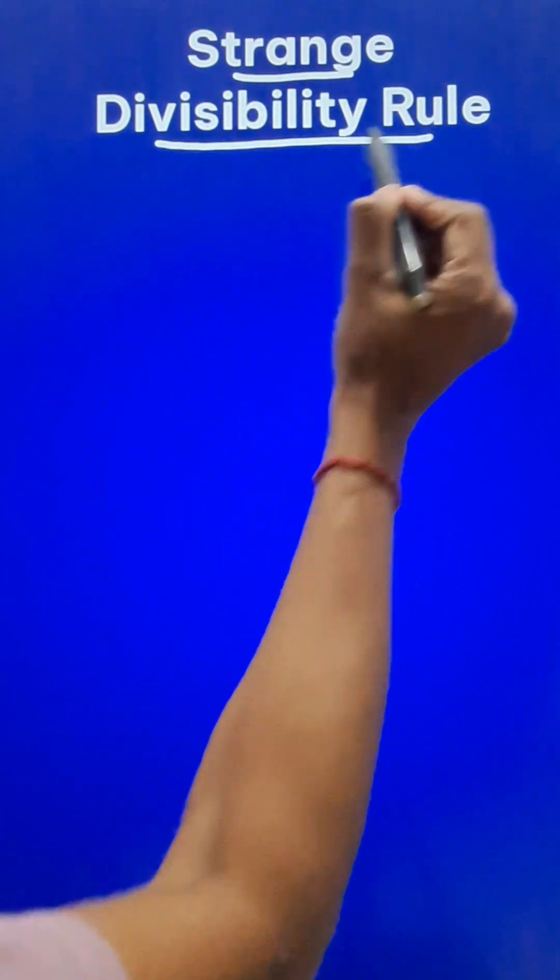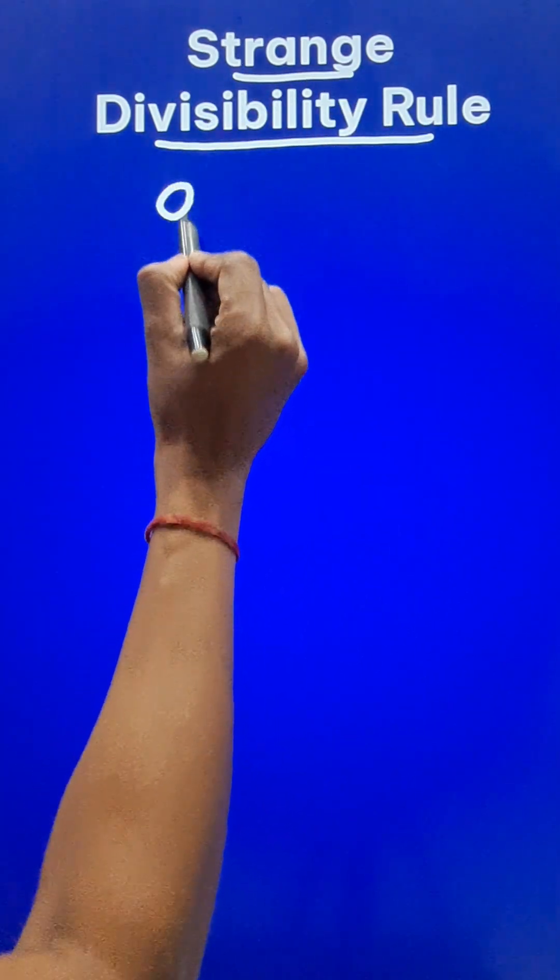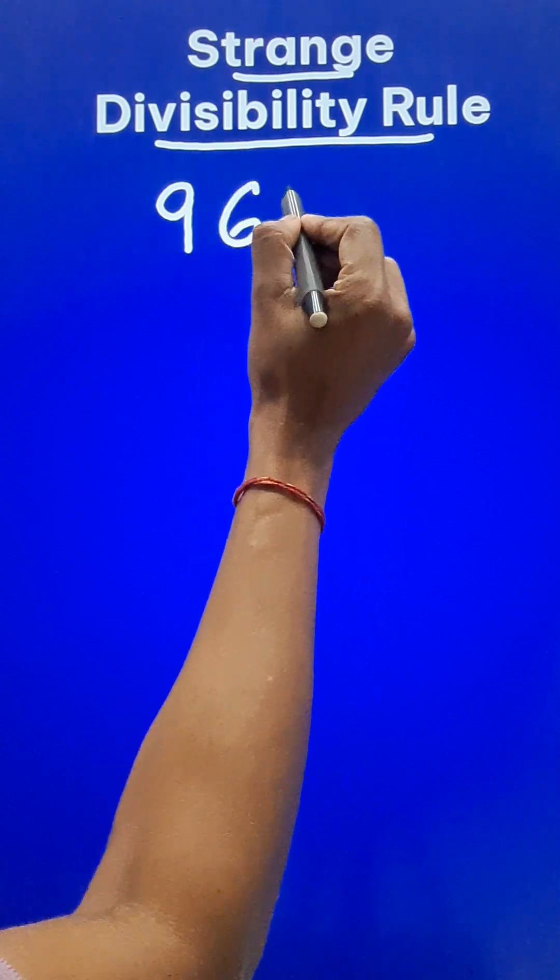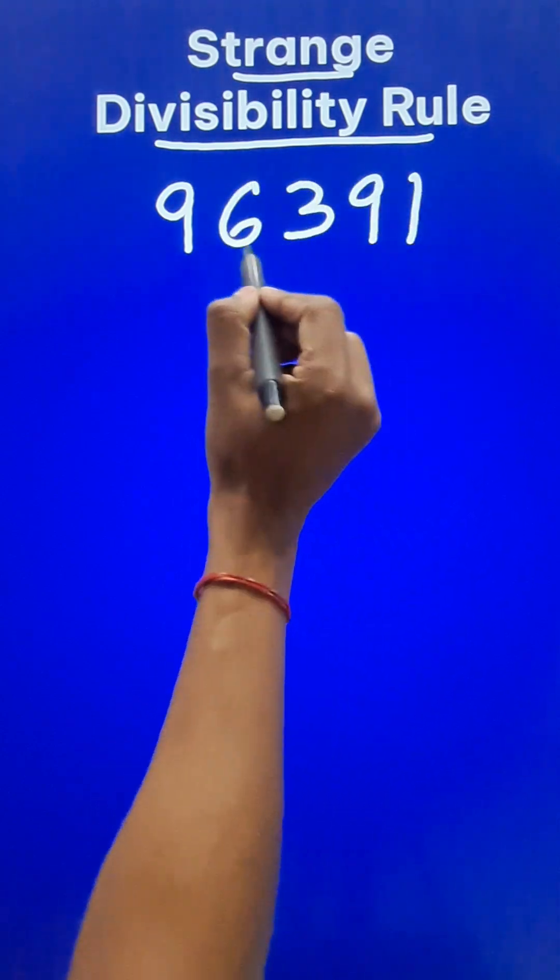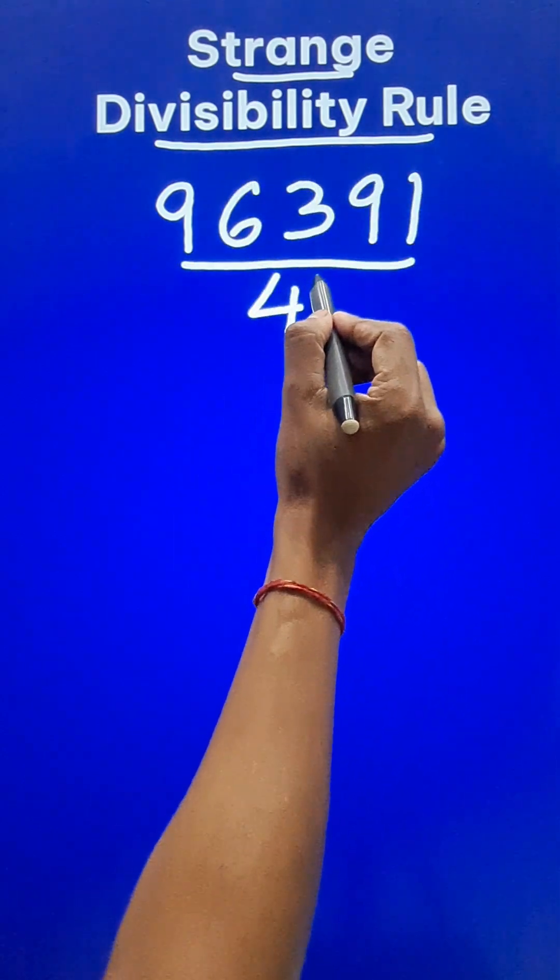Here is a strange divisibility rule. Suppose you need to check whether a big number like 96391 is divisible by a big prime number like 41 or not.